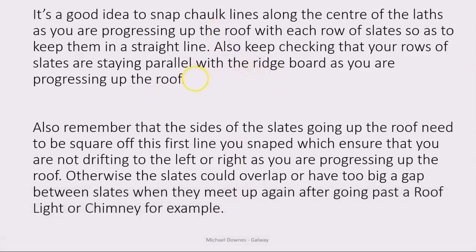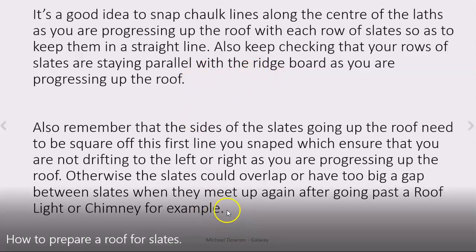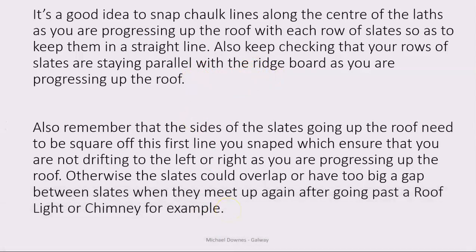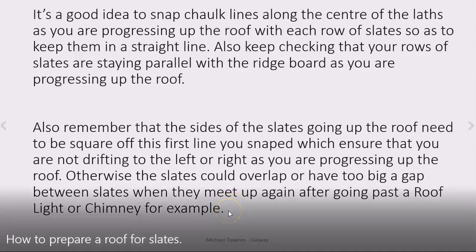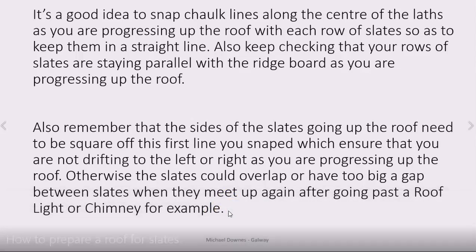Off that horizontal chalk line you need another chalk line going square off it. As you progress up the roof with your slates, you're watching that vertical chalk line. This matters especially when you go past an opening like a Velux roof light or a chimney — when you arrive on the far side of the chimney or roof opening, your slates on each side need to align correctly.